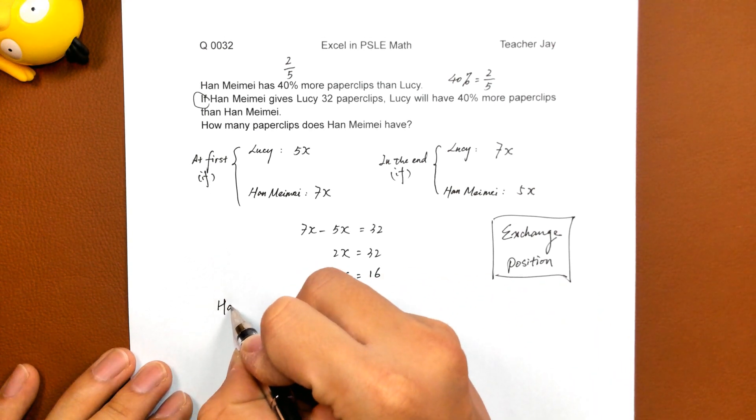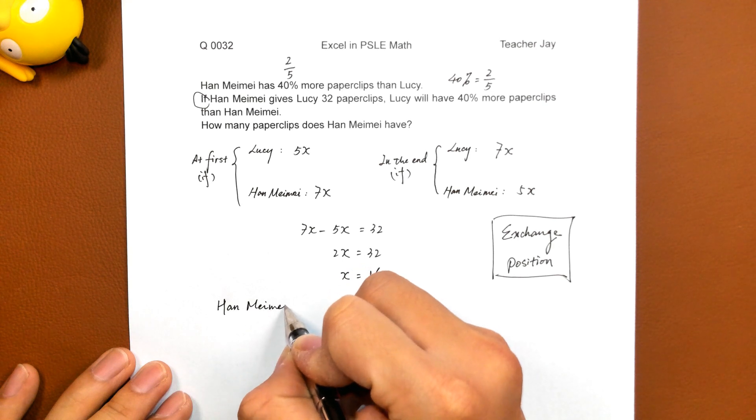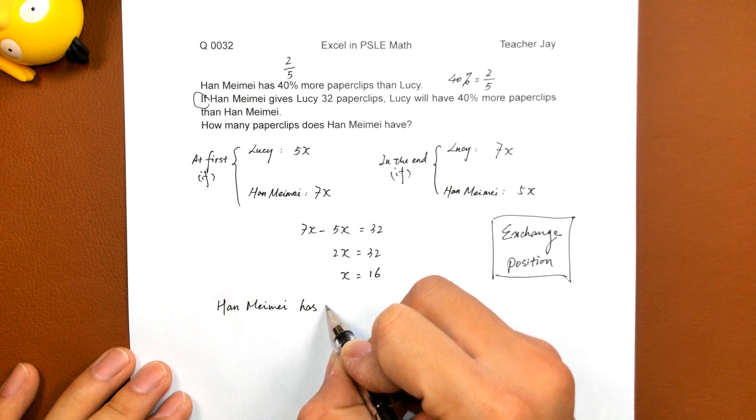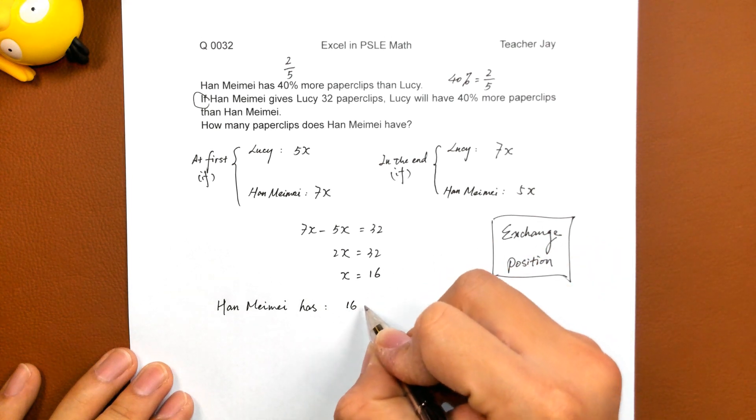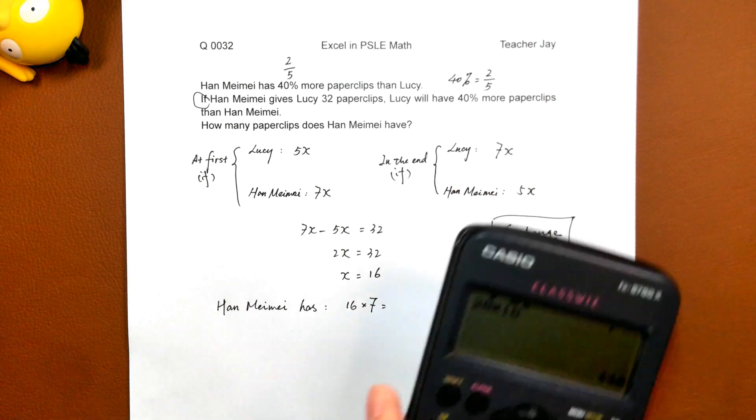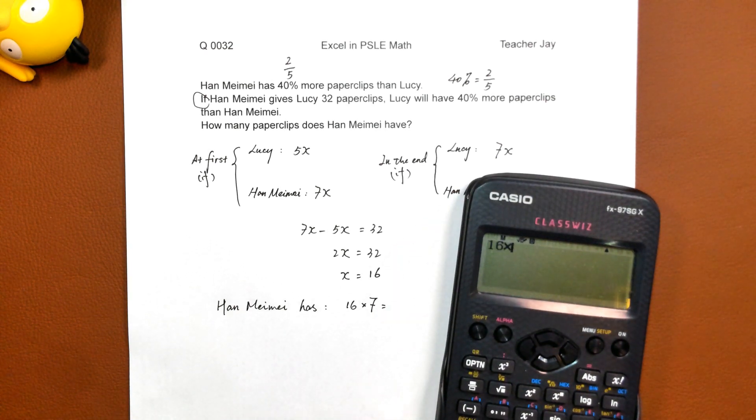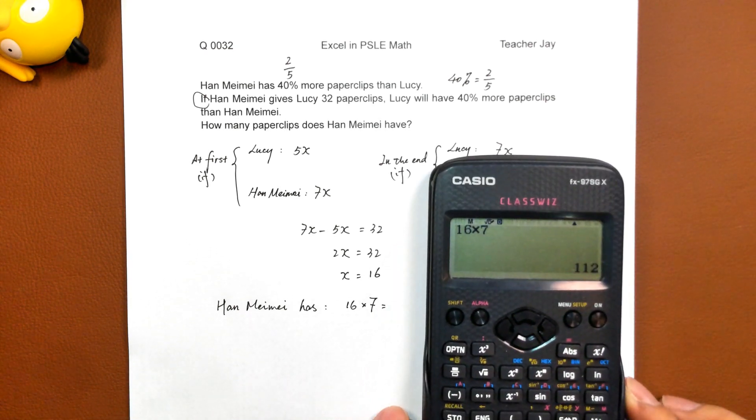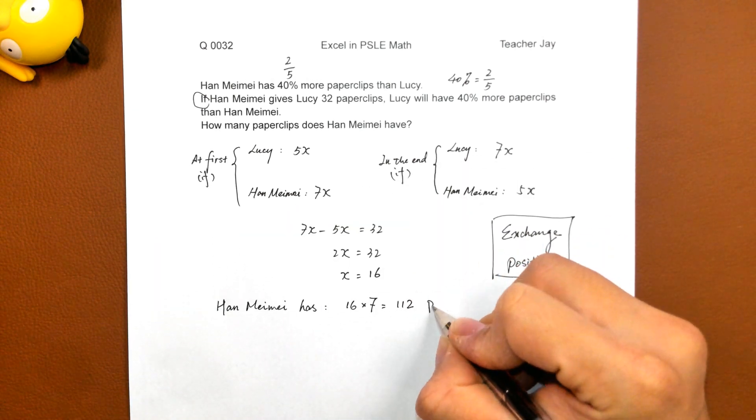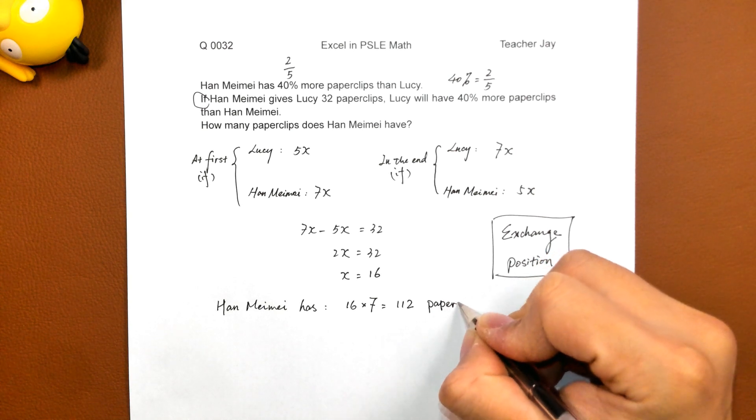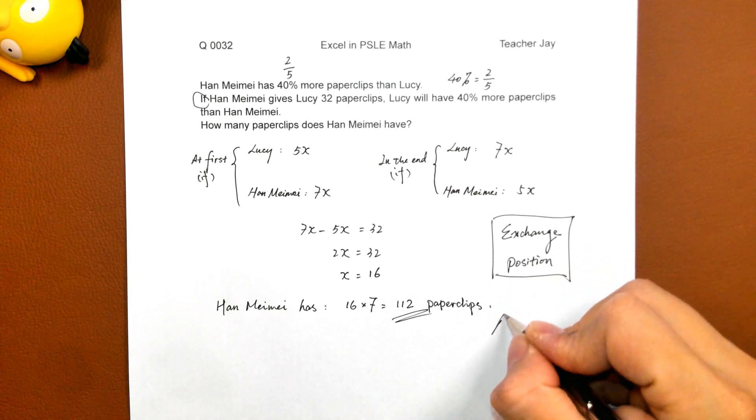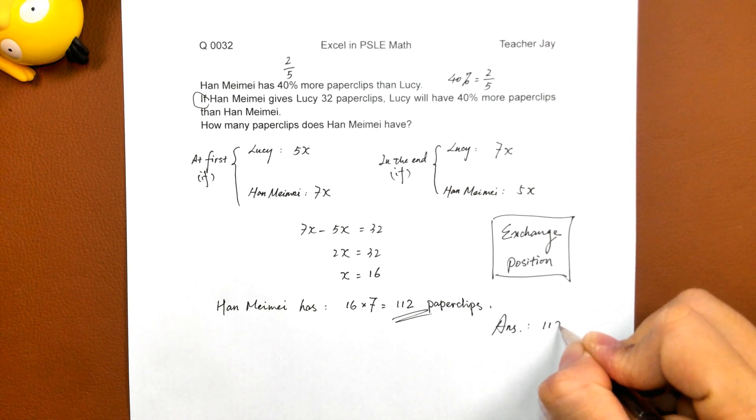So, Han Mei Mei have 16 times 7, which equals 112 paper clips. Answer: 112.